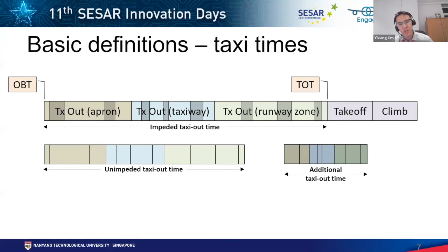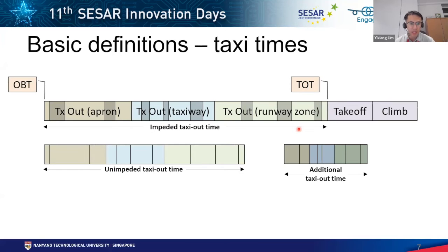Some basic definitions before the methodology. For a departing aircraft, the taxi-out time is the time to travel from the gate to the runway. We define the variable or impeded taxi-out time as the total duration from when the aircraft goes off-block to when it enters the runway. The impeded time is composed of the unimpeded time — which does not account for surface traffic — and additional taxi time due to congestion. The impeded time is harder to predict, especially at complex airports, but is what is useful for planning and sequencing in actual operations.